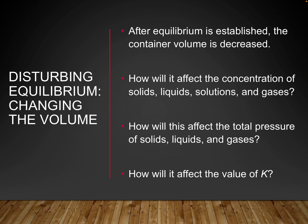One of the factors is changing the volume. So let's say that after equilibrium is established, the forward reaction went really fast, and then the forward reaction rate became equal to the rate of the reverse reaction. After this, we are going to decrease the volume of the container. I want to look at how that will affect the concentrations of solids, liquids, solutions, and gases — and how it will affect the total pressure and the value of K.